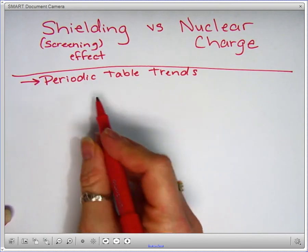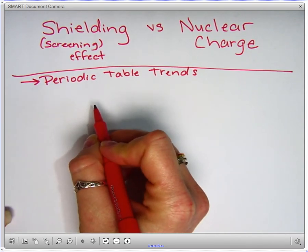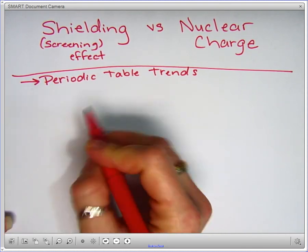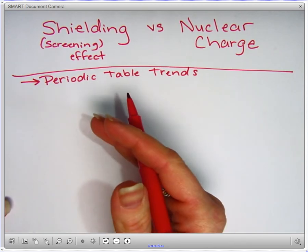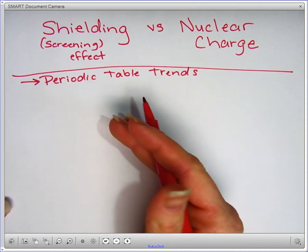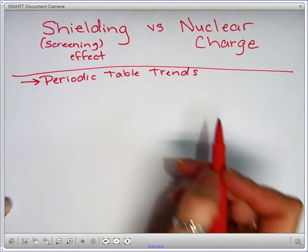In this case, shielding is where the inner electrons, the core electrons, shield the outer electrons from the nucleus.